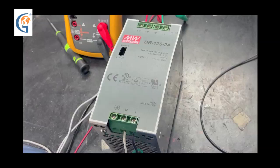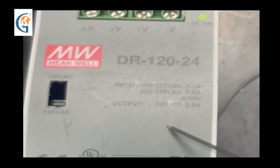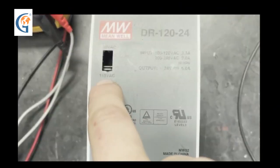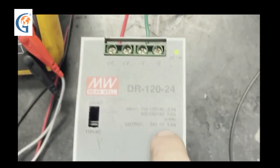This is a Meanwell 110-240 volt industrial power supply that has been repaired and is now ready for a full load test. We are going to be testing at 115 volts. The output is 5 amps.